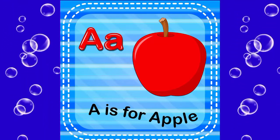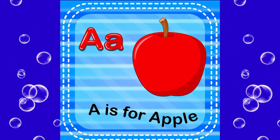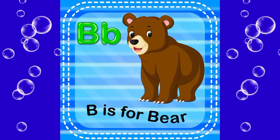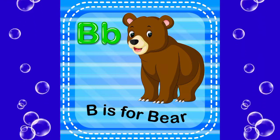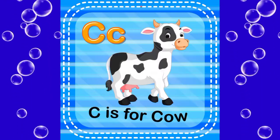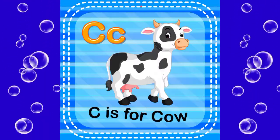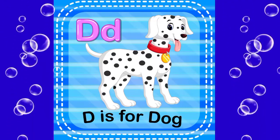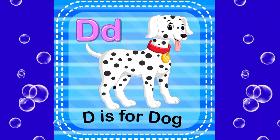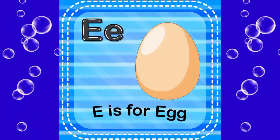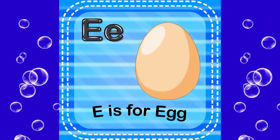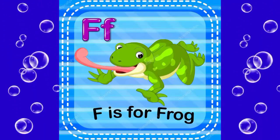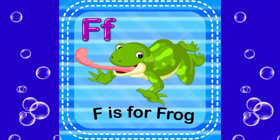A is for apple, B is for bear, C is for cow, D is for duck, E is for egg, F is for frog.